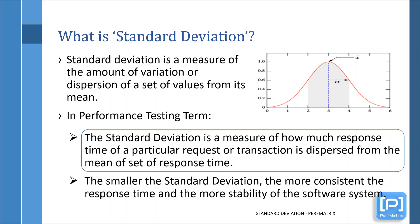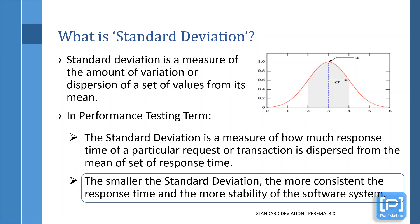Now understand the term standard deviation in performance testing terms. In performance testing, standard deviation is used for response time. Hence the definition becomes: standard deviation is a measure of how much the response time of a particular request or transaction is dispersed from the mean of the set of response times. It could be difficult to understand standard deviation from its definition, so later we will take an example for a practical understanding. Before that, an important tip: the smaller the standard deviation, the more consistent the response time, which increases the probability of consistency of an application or system.